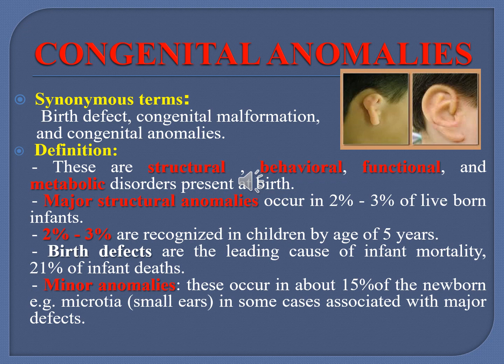For example, a defect related to the ears, such as small ears, can in some cases be associated with major defects. Minor anomalies by themselves are not detrimental, but when associated with major defects they serve as clues. An infant with one minor anomaly has a 3% chance of having a major malformation, those with two minor anomalies have a 10% chance, and those with three minor anomalies have a 20% chance.